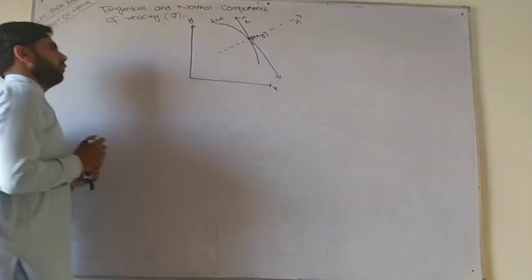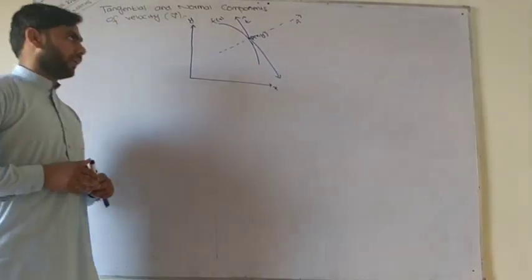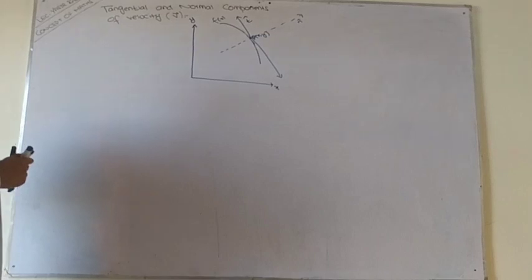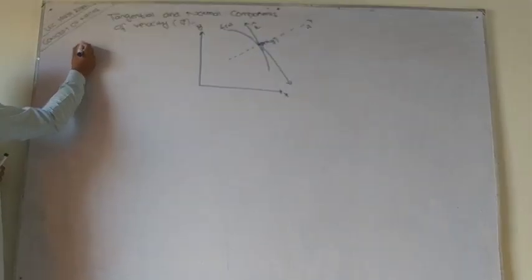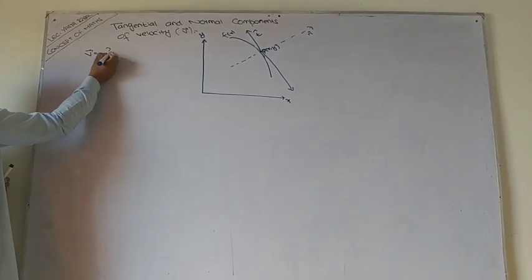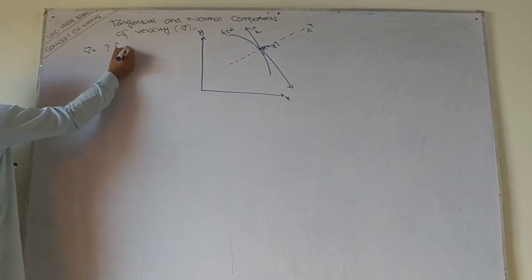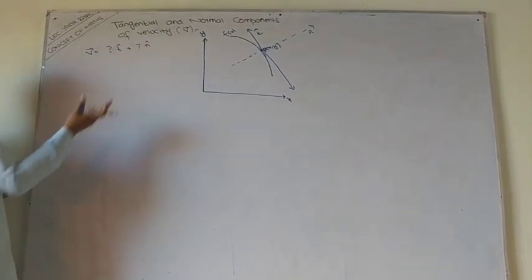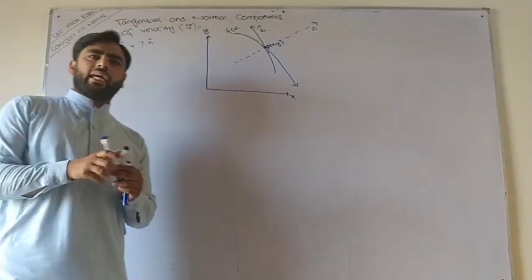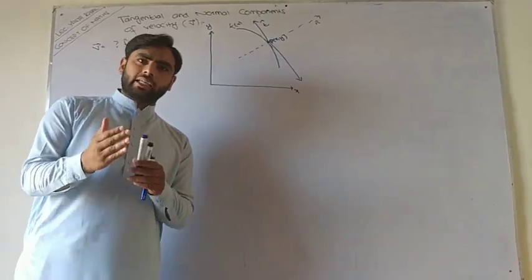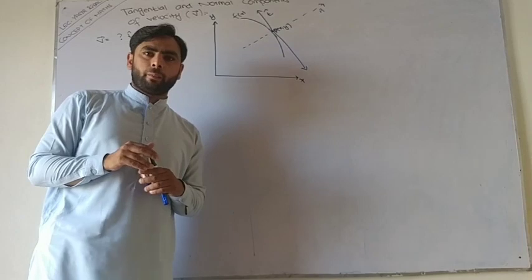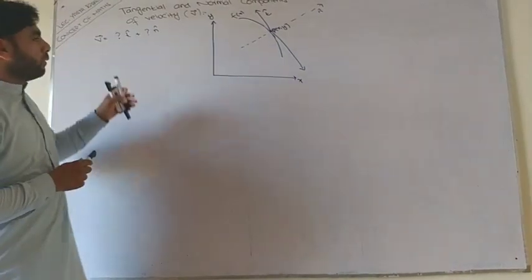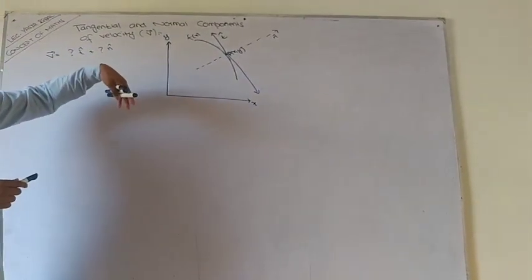Now we have to find the component of velocity: how much along tangent plus how much along normal. This behaves like i cap and j cap in 2D with an xy coordinate. Now we move on to tangential and normal components.